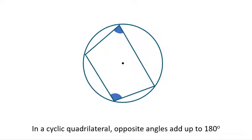The opposite angles in a cyclic quadrilateral always add up to 180 degrees.